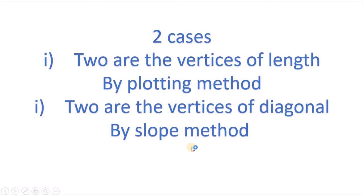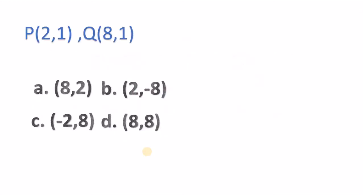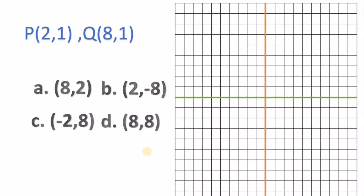If the two are the vertices of length, you have to go with plotting method. If the two are vertices of diagonal, you have to go with slope method. Remember, if by plotting method it forms the rectangle, then you don't have to check by slope method. If it doesn't form the vertices of rectangle by plotting method, then you should also go with slope method. Now let's plot this point in a graph.